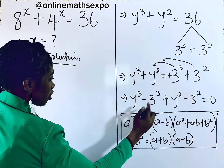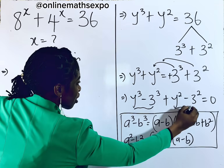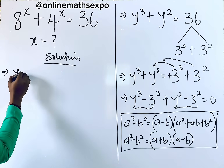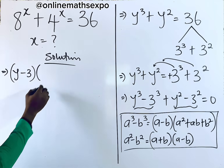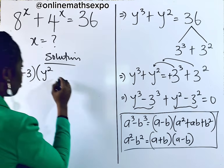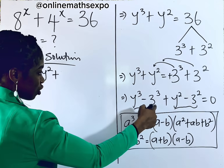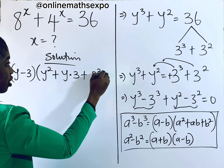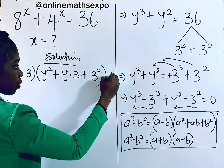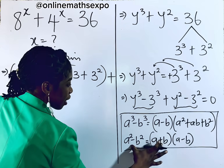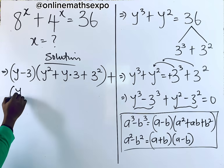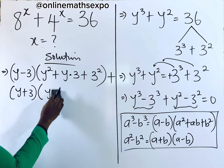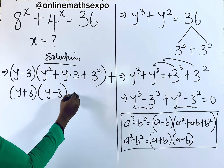These two terms and these two terms are grouped together. Applying the difference of cubes formula to the first group, we get (y − 3)(y² + 3y + 9). Then bringing down the plus sign, applying the difference of squares formula to the second group gives us (y + 3)(y − 3). Everything equals zero.